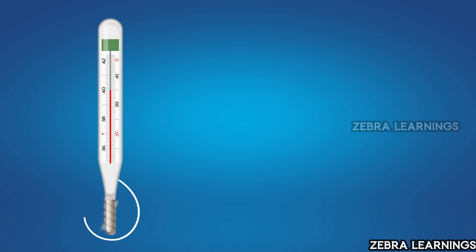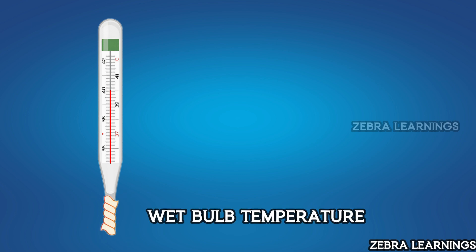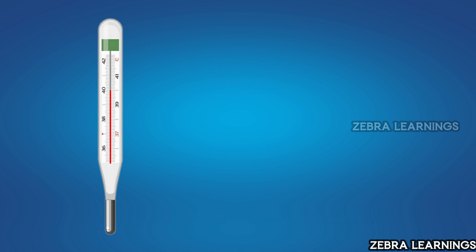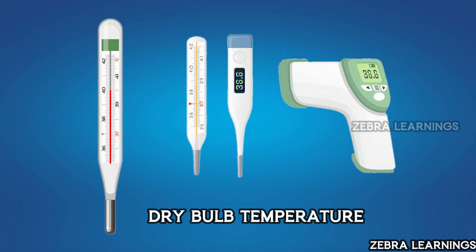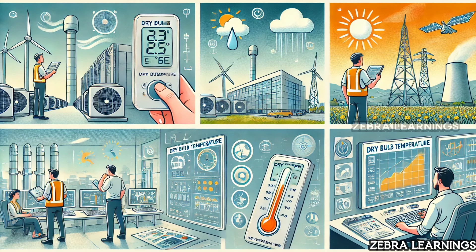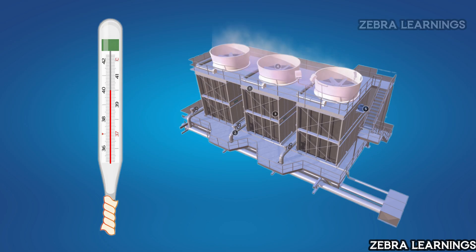If you wrap a wet cloth around the bulb and measure the temperature, that is the wet bulb temperature. If you measure the temperature directly without anything on the bulb, that is the dry bulb temperature. The temperature that we normally measure is the dry bulb temperature, which is used in most common applications.